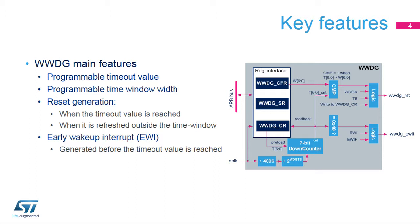This clock is divided by 4096 and by a value programmed by the application. The application can also program the reload value of the down-counter via bits T[6:0]. The window width is controlled by bits W[6:0].